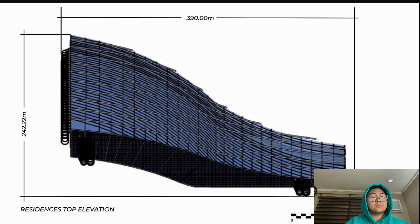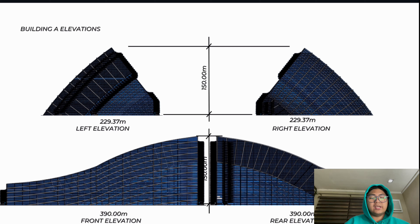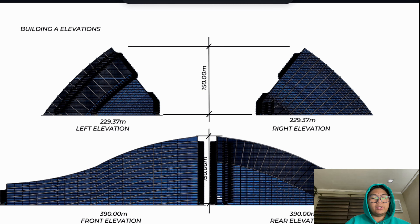These are the isometric views of the residences — basically an overview of how you can see the residences. This is the top elevation. Based on what you shared last time, I actually used the skyscraper design technique that you taught. The elevations of the building have a height of 150, which is in accordance with the height limit from the CAAP — the adjusted allowable height is just like this.